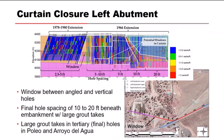With grout data from all three programs plotted on the profile, we were able to evaluate areas lacking grout closure where seepage through the abutment may be greater. One issue that became apparent was a window in the grout curtain where no grout holes were placed. The 1966 extension used all vertical holes, but the 1978 extension used angled holes for better capture of vertical joint sets — and the gap between them was not addressed. We realized this once we plotted everything, and also highlighted areas with high grout takes during the last round of grouting.